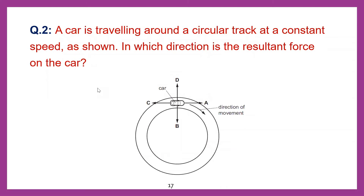Question number two. A car is traveling around a circular track at a constant speed. In which direction is the resultant force on the car acting? The force of friction between the road and the tire provides centripetal force, always acting toward the center of the circle. So the answer is B.